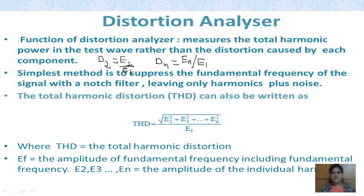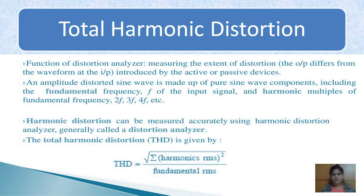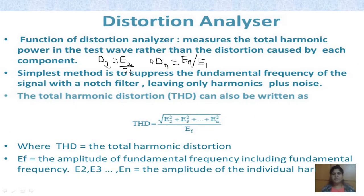The simplest method is to suppress the fundamental frequency of the signal. Substituting those formulas, the sum of all harmonics is D2 + D3 + D4 + ... + Dn divided by E1. D2 is E2/E1, D3 is E3/E1, D4 is E4/E1, and so on. If you want to find the percentage of total harmonic distortion, the formula is: percentage THD = total harmonic distortion × 100.